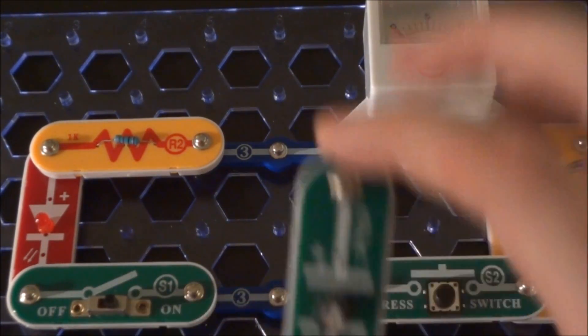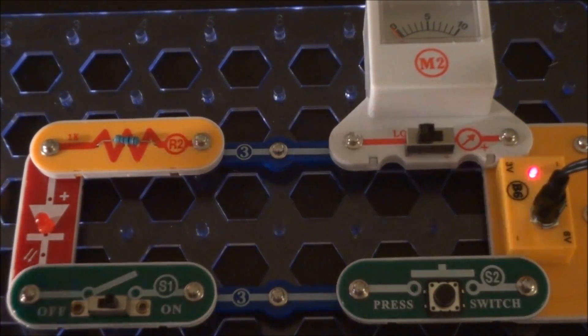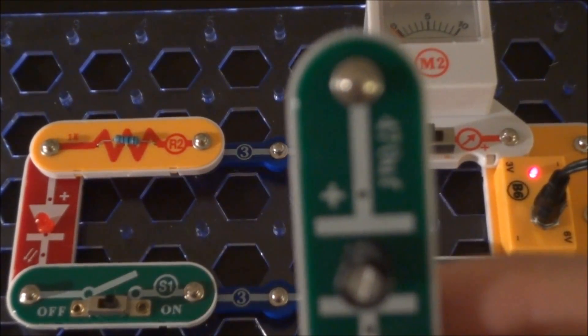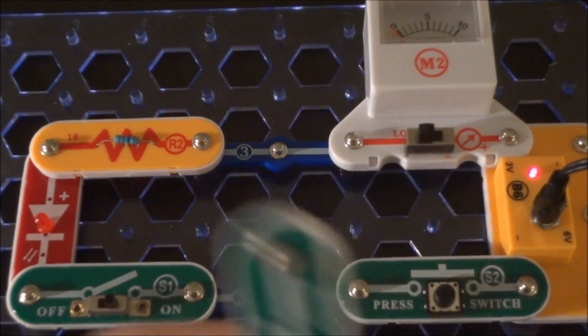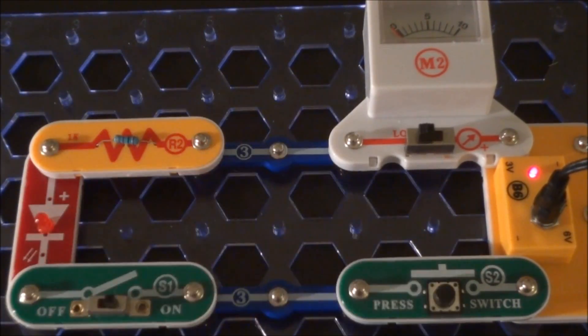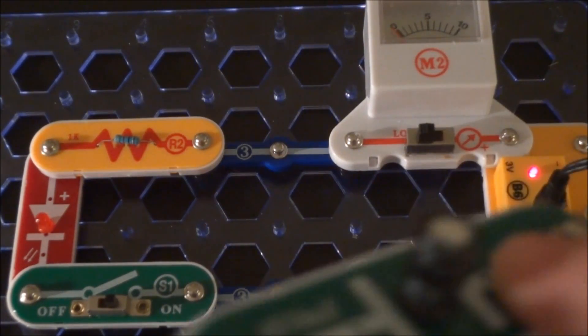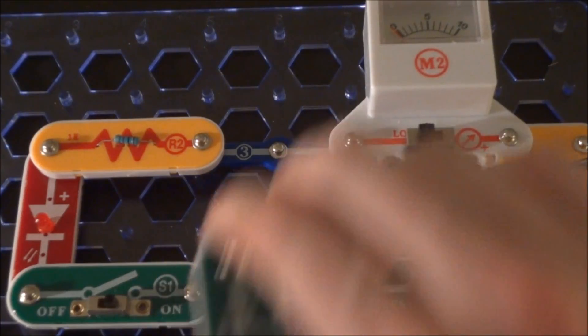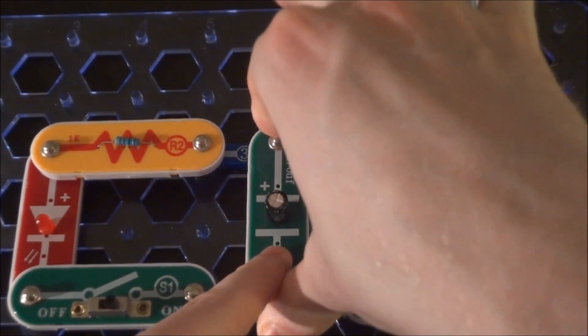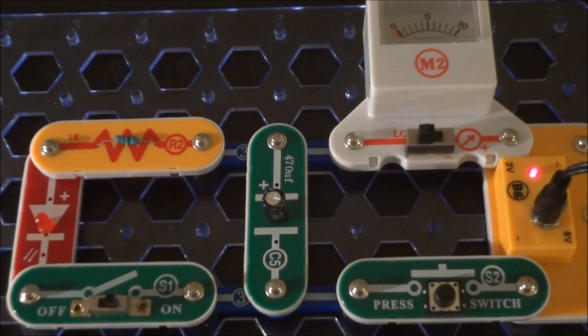So we'll take our 470 microfarad capacitor and put it in parallel with our device here. Notice that it has a positive sign - you always want to install capacitors correctly just like a diode, because if you install it the wrong way you can actually cause these to fail. They won't work properly. So we install it in parallel right in the middle there.